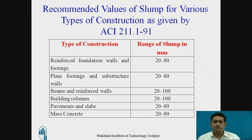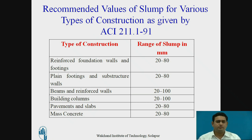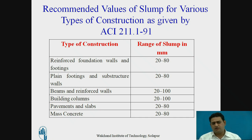The recommended slump values for various types of construction are: reinforced foundation walls and footings — 20 to 80 mm; plain footings and substructure walls — 20 to 80 mm; beams and reinforced walls — 20 to 100 mm; building columns — 20 to 100 mm; pavements and slabs — 20 to 80 mm; and mass concrete — 20 to 80 mm. These guidelines are very helpful for carrying out concreting work as per the client's requirement.